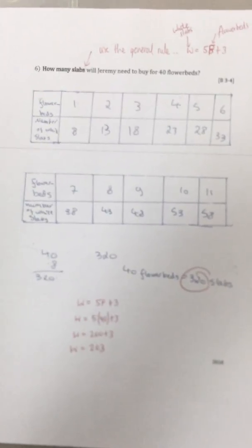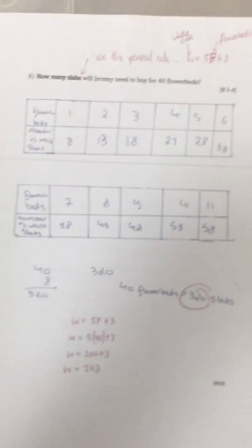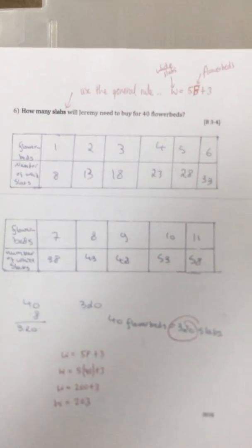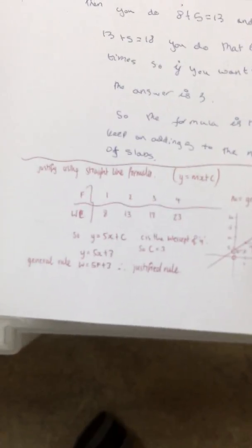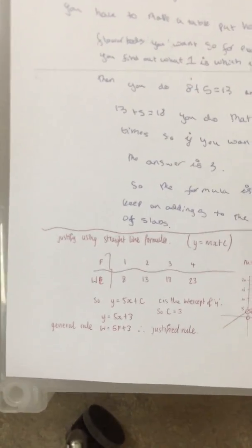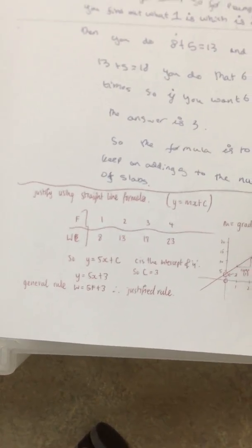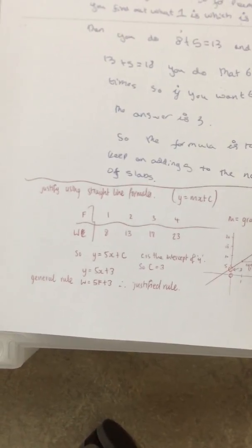For grade 6, doing it the correct way — using red writing to illustrate — would have earned you an 8. Get your general rule, verify it for more than one example, and that's it. For grade 7 or 8, you would also have to justify the general rule, which means showing another mathematical proof of finding the same general rule.